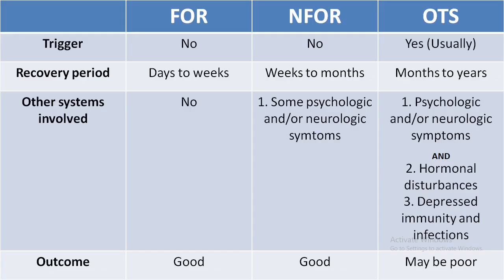These conditions are primarily divided into three categories. The first is Functional Overreaching (FOR), also called short-term overreaching. Excessive training leads to a fall in performance; however, if the person takes adequate rest, recovery takes place in a matter of days to weeks. The outcome is good, and the athlete supercompensates — their performance becomes better than before.